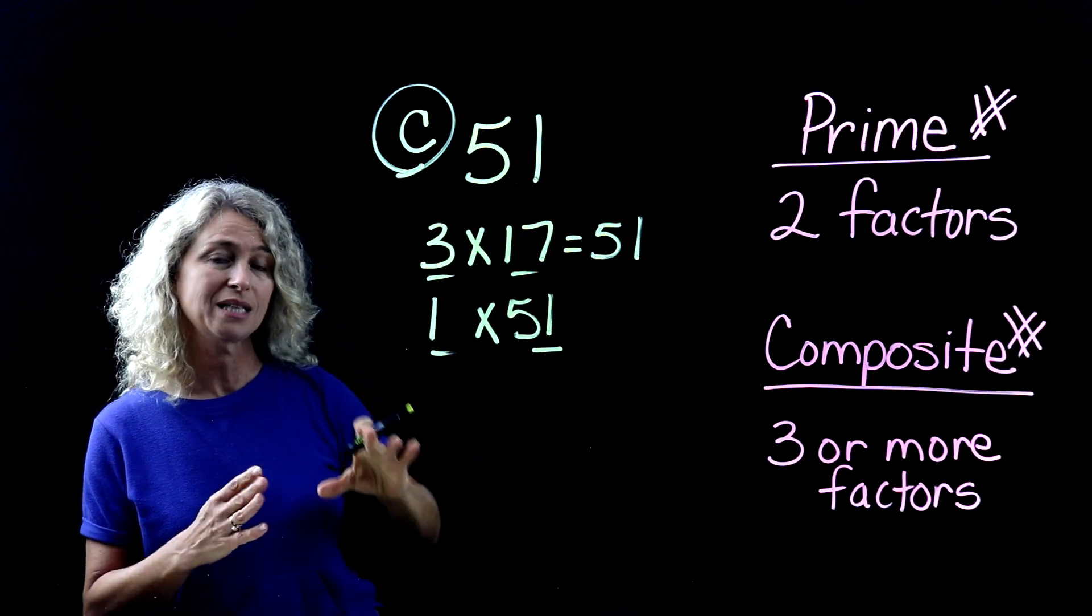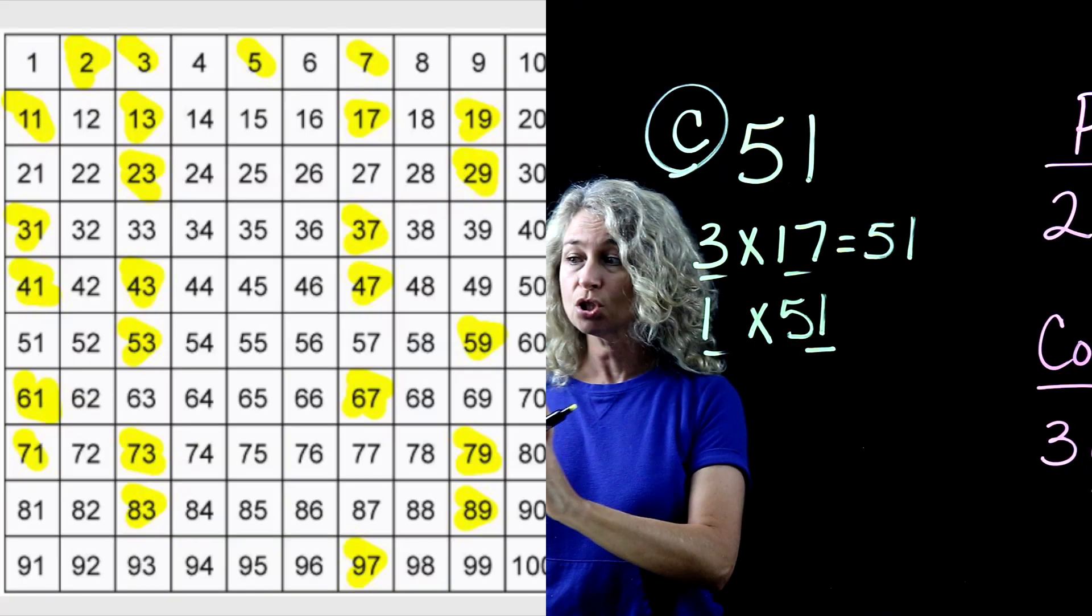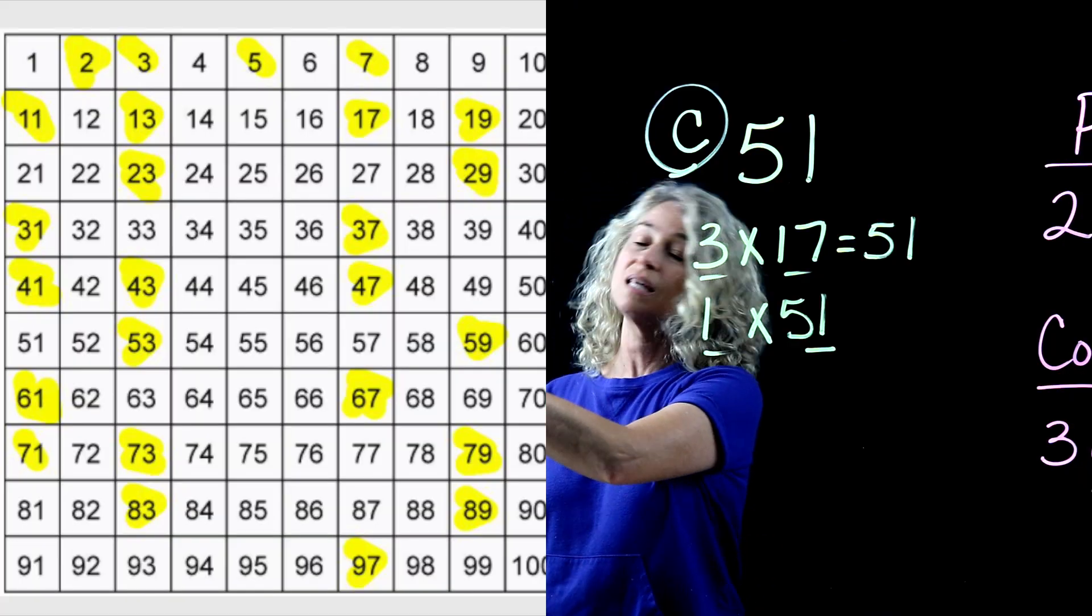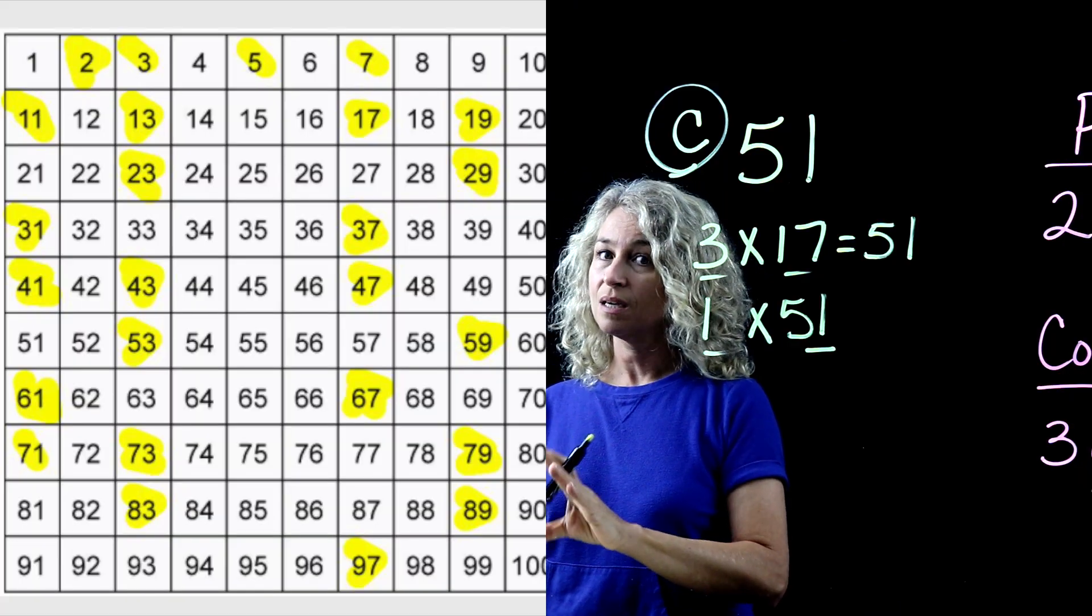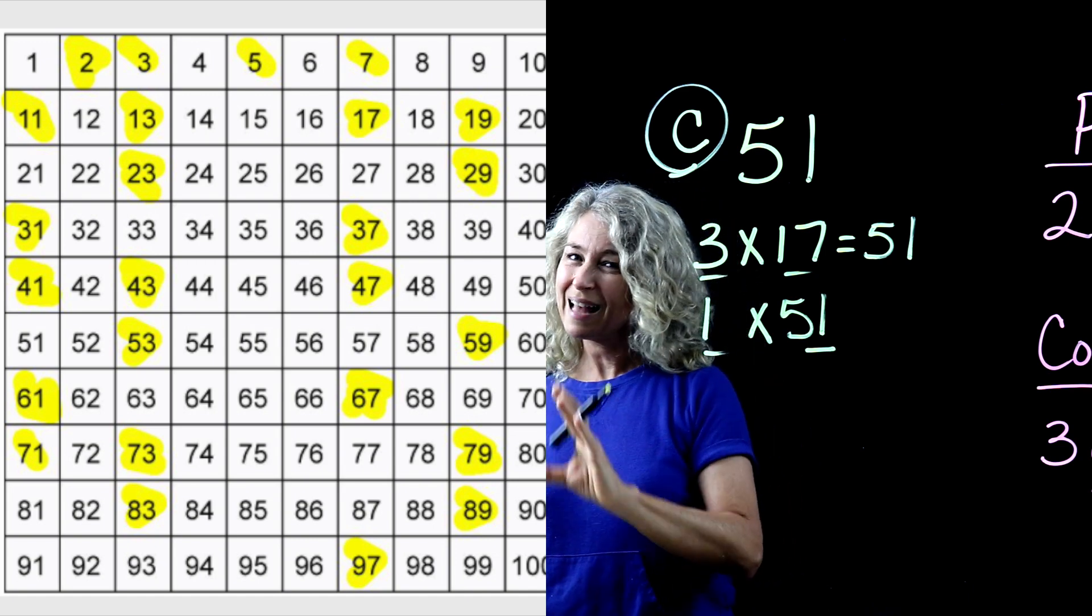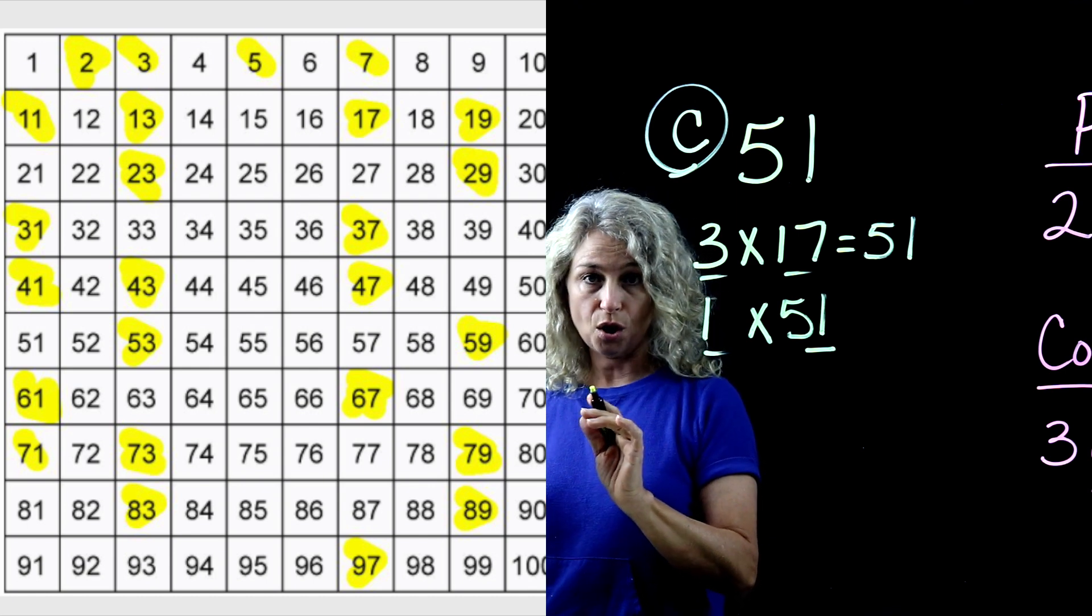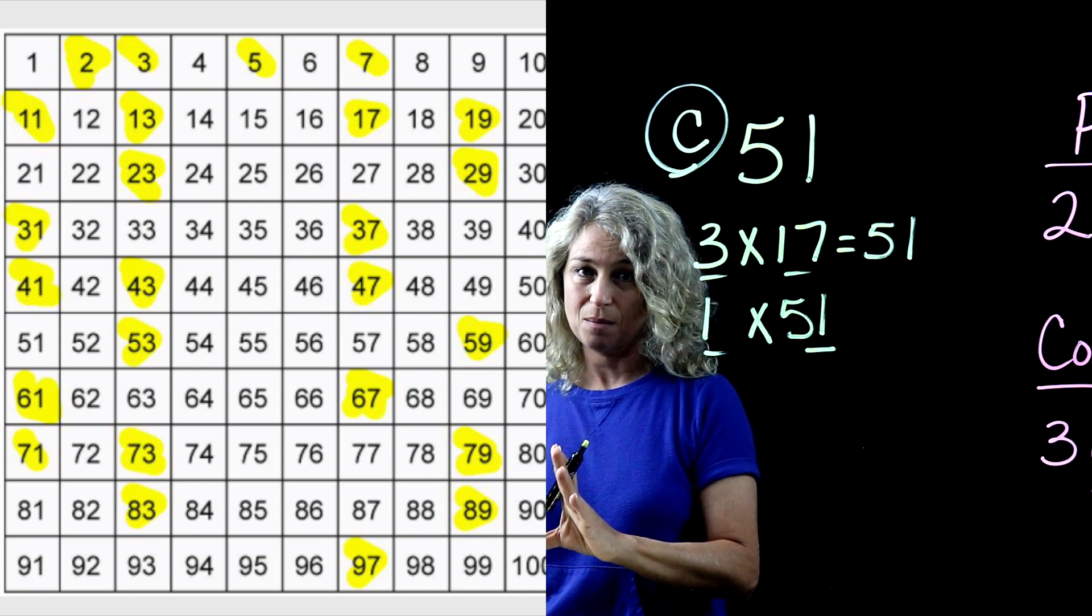So when you get to these larger numbers, a good method is either to look at a chart and see these yellow highlighted numbers. These are your prime numbers. And for the larger ones, there's not that many. And it's probably just a good idea to just memorize these larger numbers that are the prime numbers.